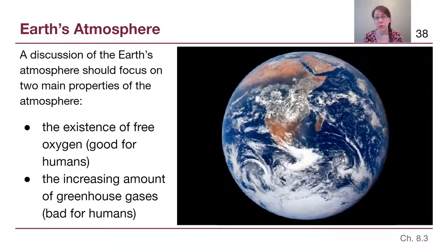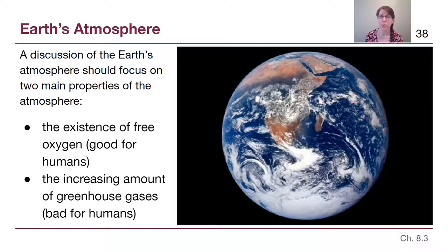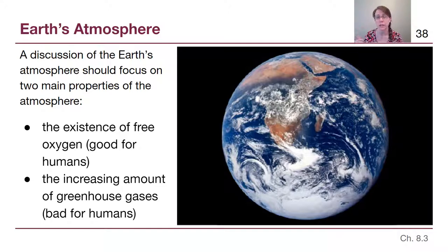Any discussion of Earth's atmosphere really should focus on two main properties. The first is that there's oxygen — free oxygen molecules, O2 molecules. This is really good for us to have. Oxygen is really reactive; it can find a lot of different molecules and have chemical reactions and no longer be free O2. The fact that we have it is because there is a constant source from plant and biomatter creating that oxygen for us. That is unique to Earth, and it's one of the things we can look for when searching for life elsewhere.